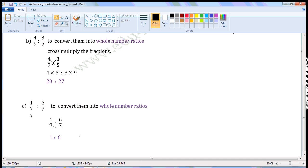Next ratio: 1/7 is to 6/7. We have to convert them into whole number ratios. So write 1/7 is to 6/7.